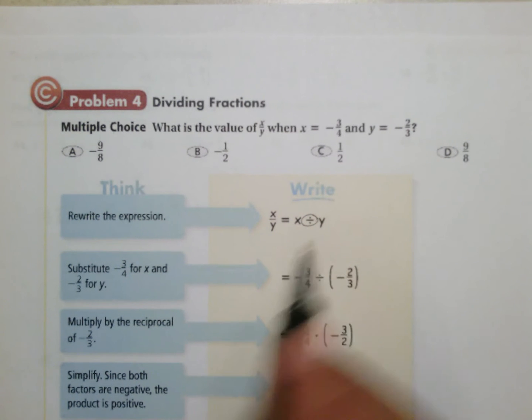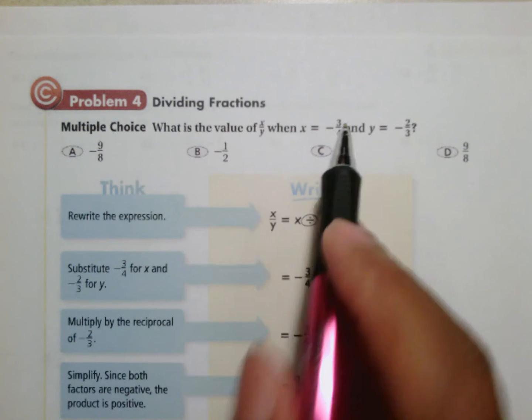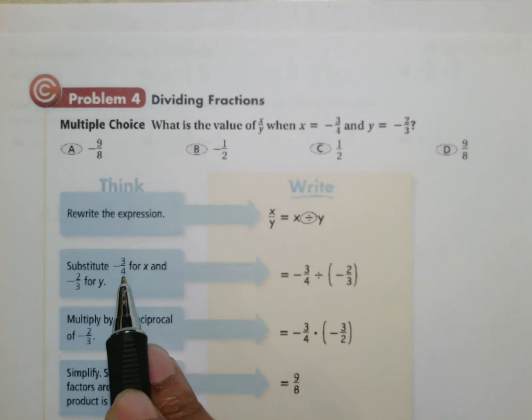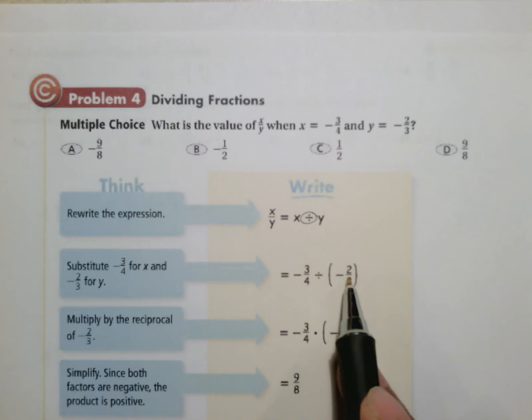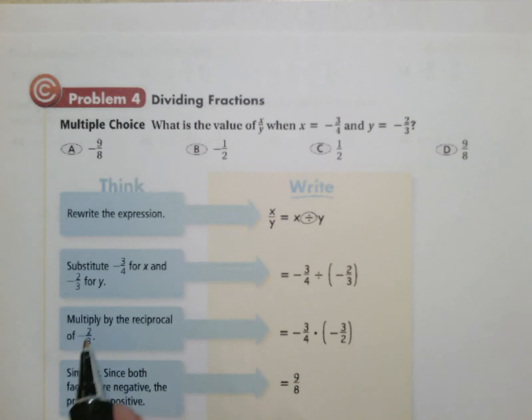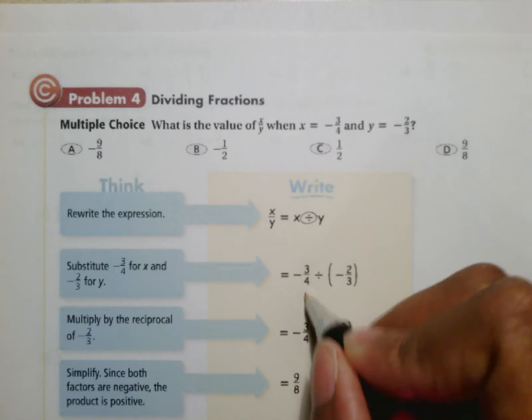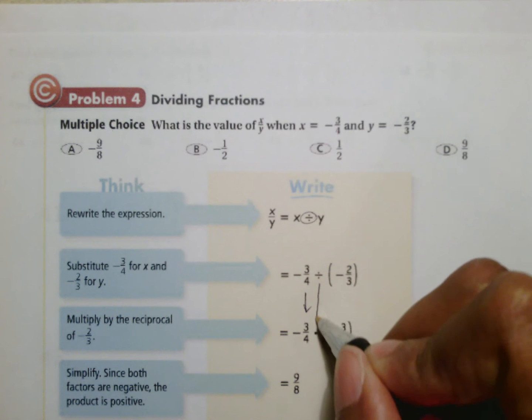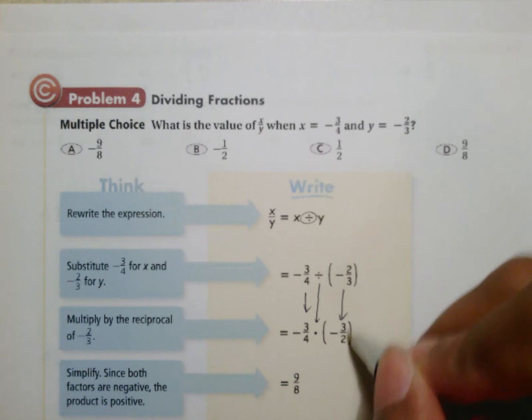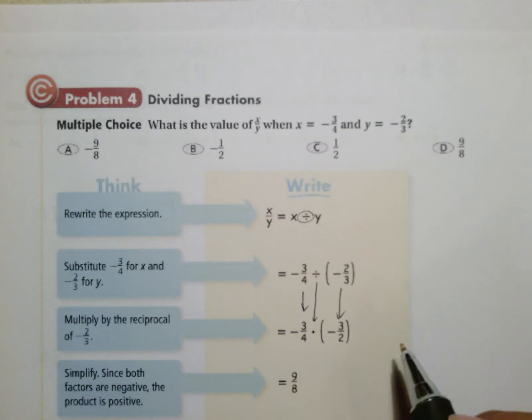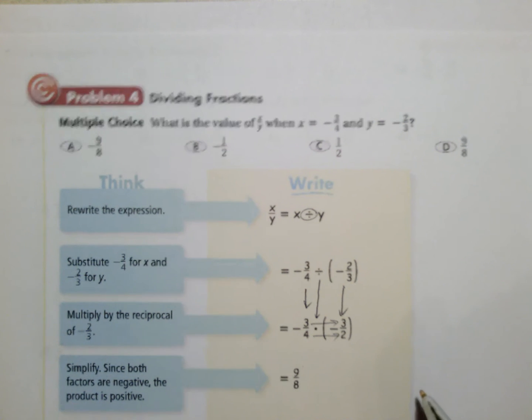So the first thing they did is rewrite it as a division problem with a true division sign. I think we can do that. It says now substitute. We did that before when we were doing order of operations. So substitute negative 3 fourths for x divided by substitute negative 2 thirds for y. The third thing it said is multiply by the reciprocal. So I still see 3 fourths here. I see that they changed the division to multiplication. Oh, and they also flipped the fraction over. And then after that it looks like they went 3 times 3 is 9, 4 times 2 is 8.